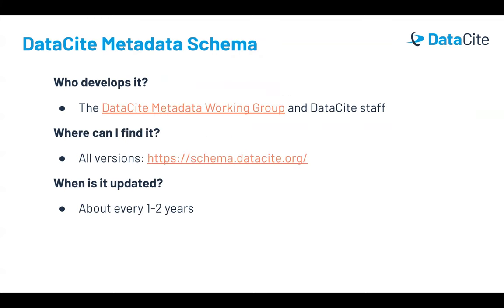The schema is developed by the Datasite Metadata Working Group, which is a group of volunteers who work in collaboration with Datasite staff. The schema can be found on the website schema.datasite.org, which includes the official documentation, the XML schema, and various examples. The schema is updated about every one to two years.